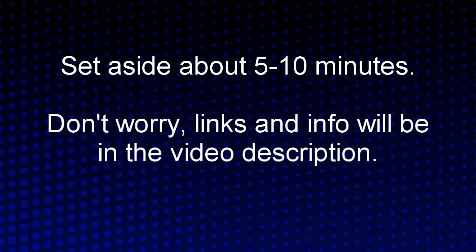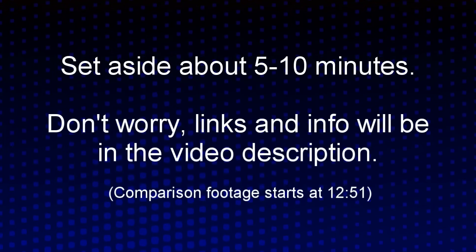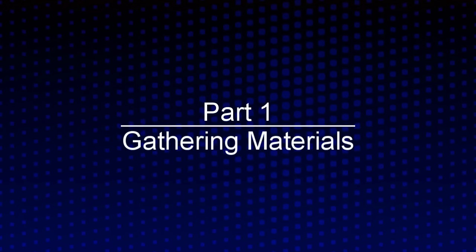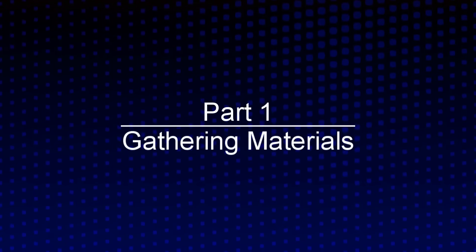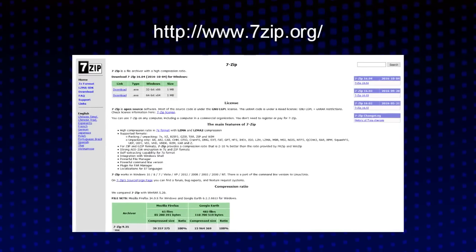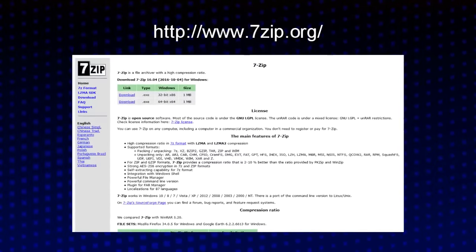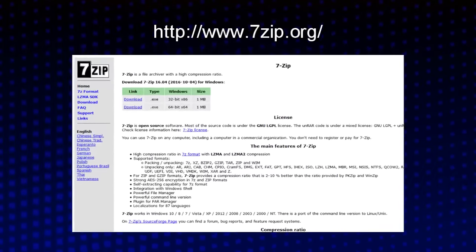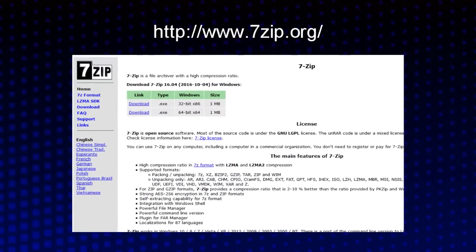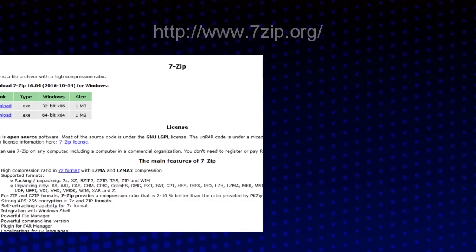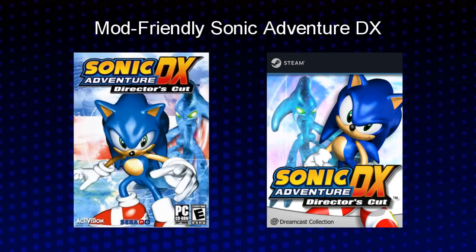Links to all these files will be available in the video description, as well as a written text version of this tutorial. And once we're done, I'll have a bunch of comparison footage to show off as well. So first we're going to gather the materials we need. If you don't have 7-Zip, you'll need to download and install it. A lot of the files we'll be working with are contained inside of 7-Zip archives. You should probably have 7-Zip installed anyway, given how useful it is. Next, we'll need a mod-friendly version of Sonic Adventure DX.